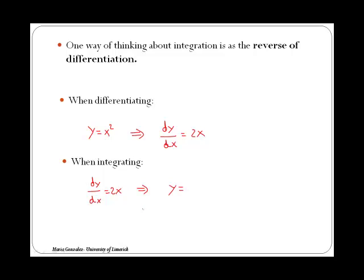which function has 2x as its derivative? By looking at the example above, in this case you can guess that one answer would be x squared, because 2x is the derivative of x squared.